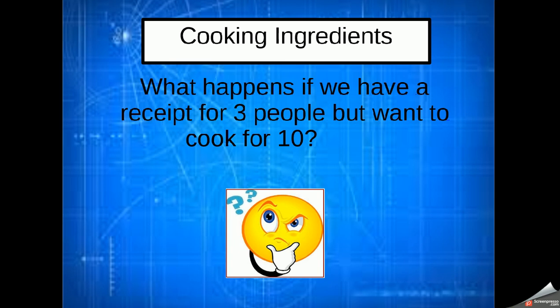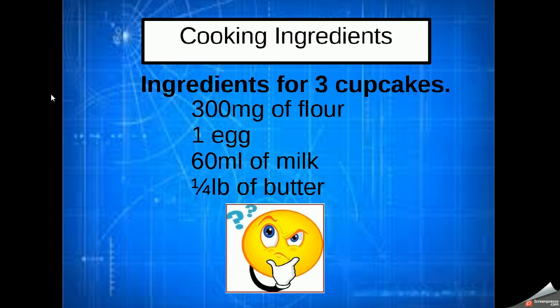Here I've got an example. What happens if we have a recipe for three people but we want to cook it for ten people? So what we've got here is ingredients for three cupcakes—we actually want ten. It's telling us 300 milligrams of flour, one egg, 60 millilitres of milk, and a quarter of a pound of butter.